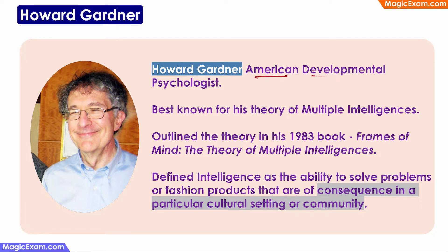Howard Gardner was an American developmental psychologist, best known for his theory of multiple intelligences. He first published this theory in 1983 in his book titled Frames of Mind – The Theory of Multiple Intelligences. Previously, many psychologists and scientists defined intelligence as the ability to acquire knowledge, identify problems, and use that acquired knowledge to solve those problems. Gardner expands upon this and says that the problems being solved or the products being developed should be of some consequence in a particular cultural setting or community — that is, these should be contextually connected to real problems, not imaginary ones.